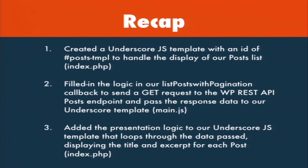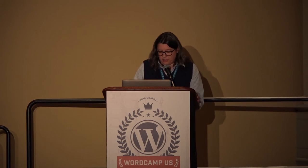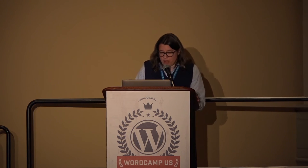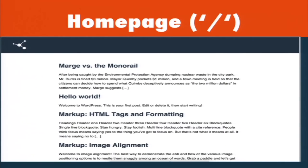To recap: we created an Underscore JS template with the post-tmpl ID, filled in the logic in our list_posts_with_pagination callback, sent a GET request to the WP REST API posts endpoint, passed the response data back to our Underscore template, and in the template added the presentation logic to loop through the posts and display the title, excerpt, and URL for each post. What you end up with on the home page looks like this.